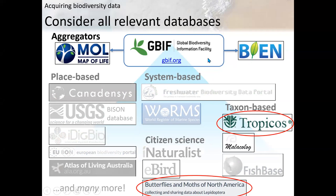Why not just search one of these aggregators? A couple of reasons. You're more likely to get more information from primary databases. For example, Tropicos data hasn't been updated in GBIF since 2014 due to a technical issue, so for the latest plant data you should go directly to Tropicos. Likewise, Butterflies and Moths of North America doesn't appear to be represented in GBIF, so if you wanted to study those taxa you would need to go directly to that database.